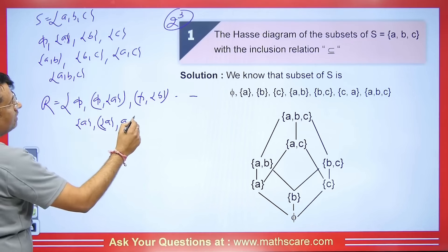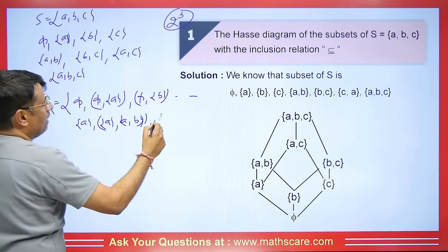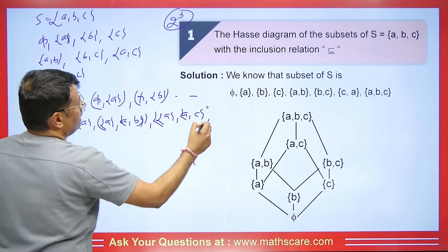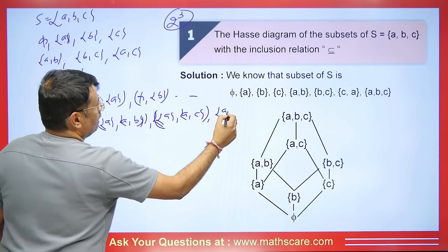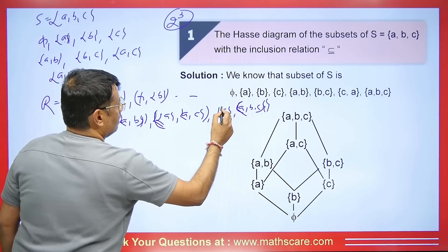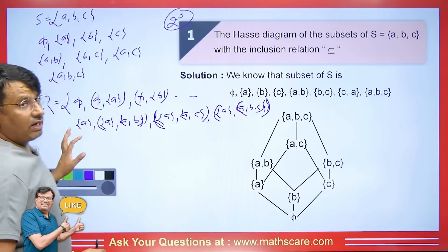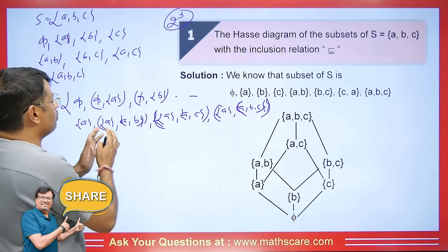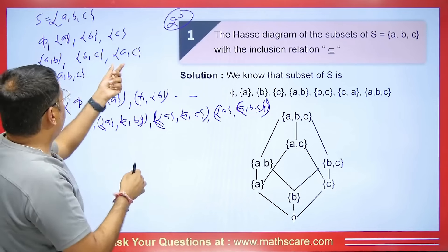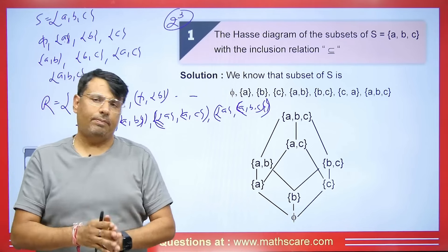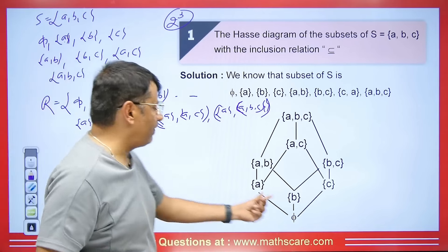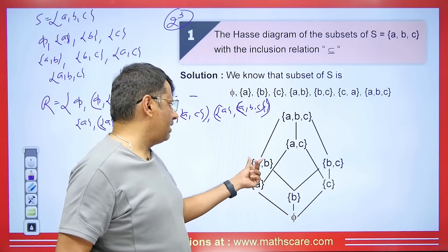A is its own subset. A is a subset of AB, A is a subset of AC, and A is also a subset of ABC. B is a subset of AB and also a subset of BC. So we can write these relations out. Now, how will we make this into a Hasse diagram?